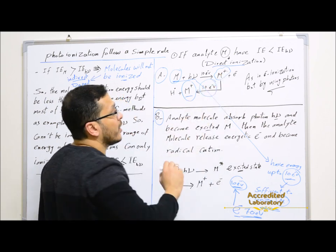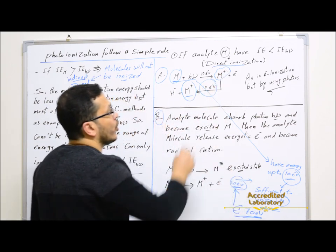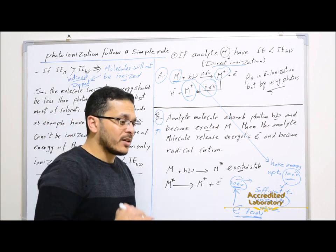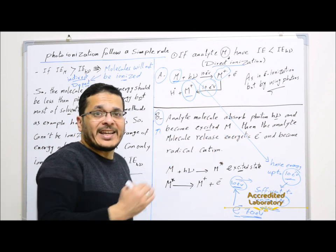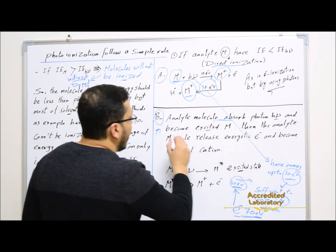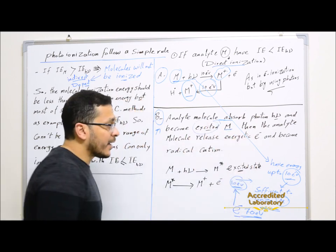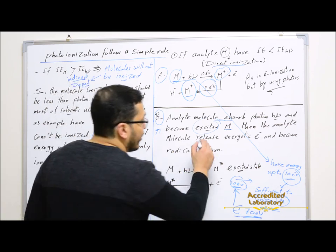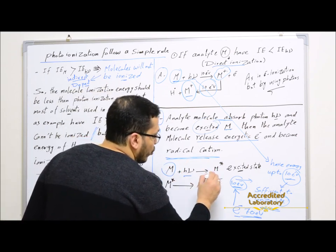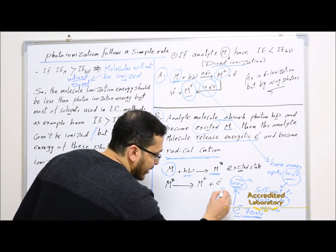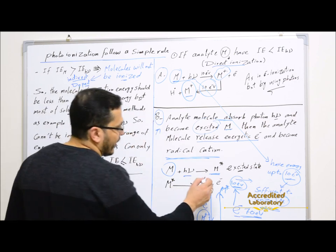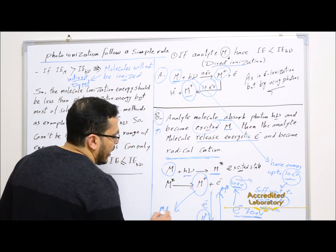The analyte molecule is converted to a molecular ion, and then the molecular ion with another 10 electron volts will be converted to the analyte ion. In another pathway, analyte molecules will absorb the photons and transfer to the excited state. Then they will release an energetic electron and convert to the analyte ion. The analyte molecule absorbs the photon, becomes excited, then loses an energetic electron and becomes a radical cation — the analyte ion — that will be transferred to the mass analyzer.